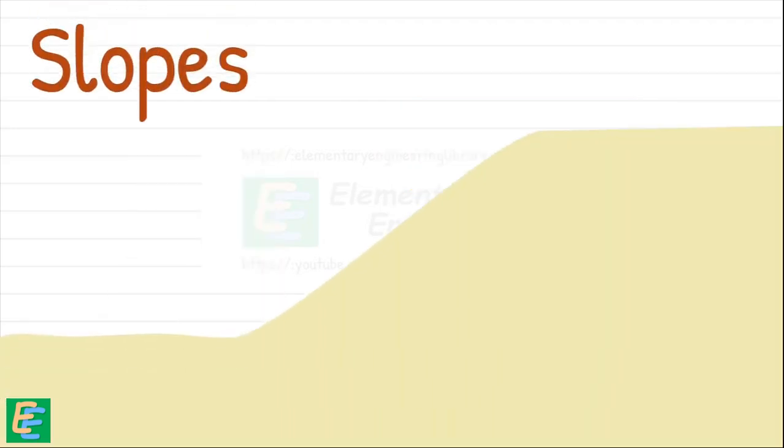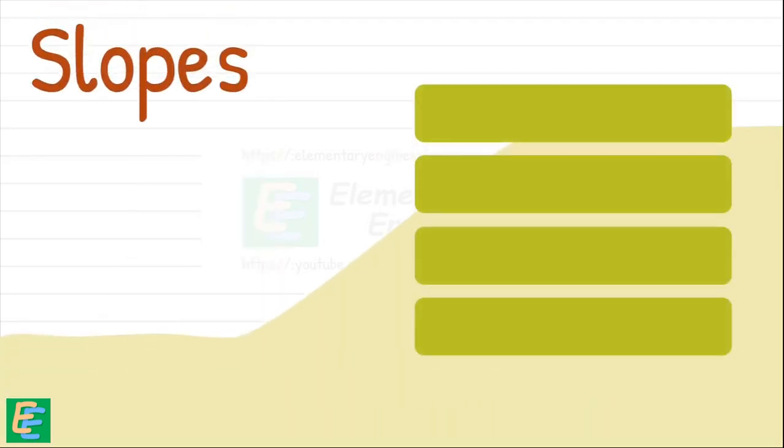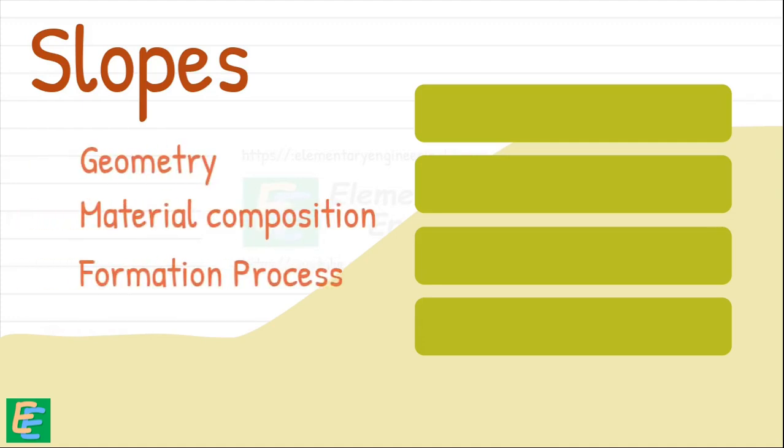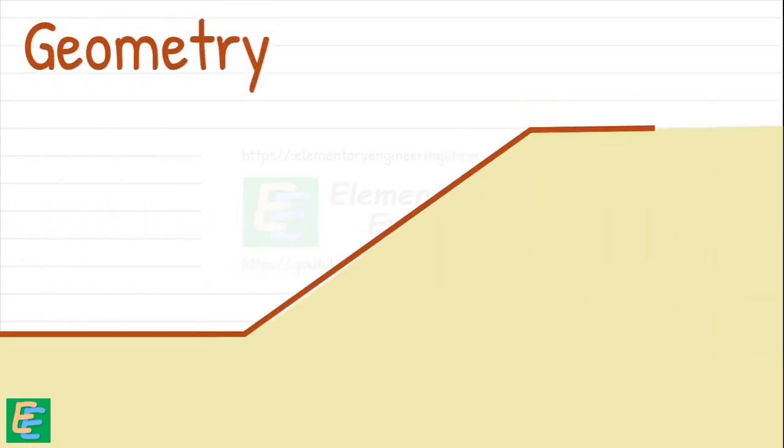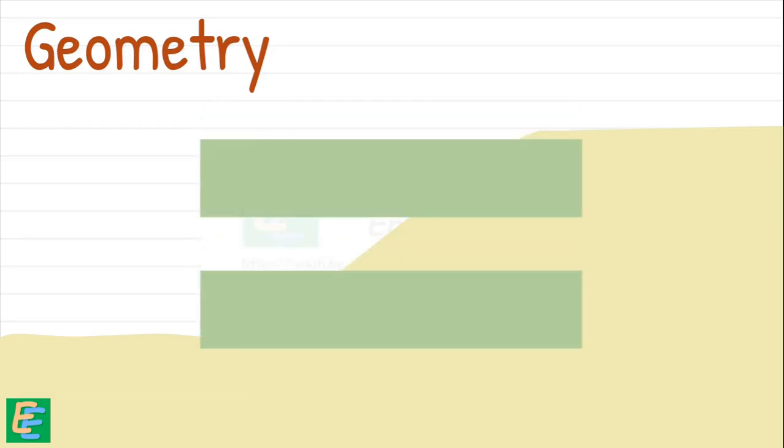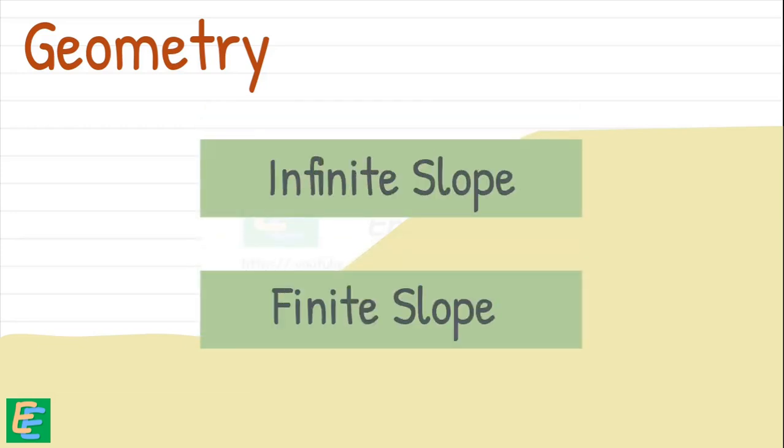Slopes can be classified into different categories based on their geometry, material composition, formation process or stability. However, based on their geometry, slopes are primarily classified into two categories: infinite slopes and finite slopes.